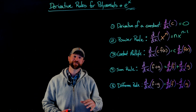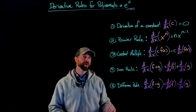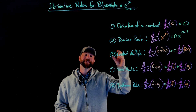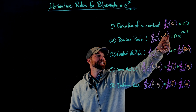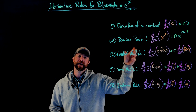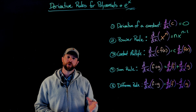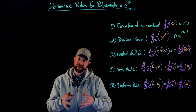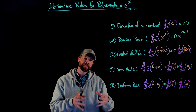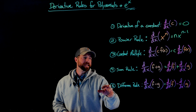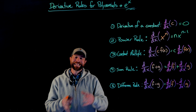Those are our five first basic rules for differentiation. The derivative of any constant is zero. The power rule tells us that the derivative of x to the n is n times x to the n minus one — you bring down the exponent as a multiplier and subtract one from it. Third is the constant multiple rule: move any constant factors out front and differentiate the variable part. The sum and difference rules say you can attack each term of a polynomial individually.